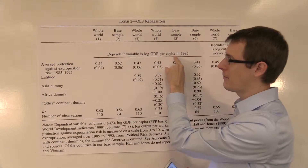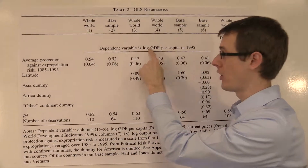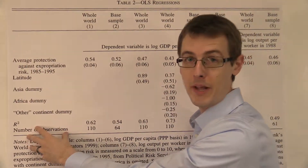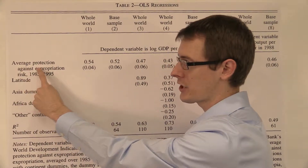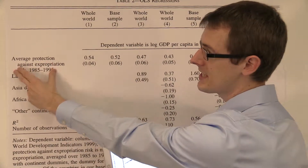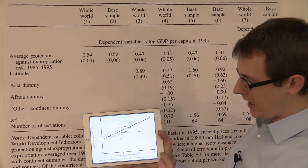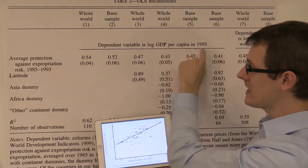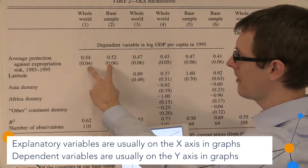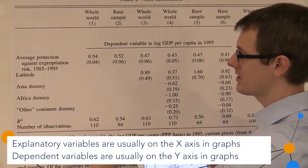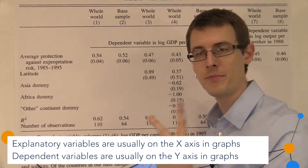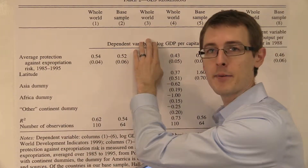Here I've got my outcome variable — economic development, log GDP per capita in 1995. Over here are explanatory variables: average protection against expropriation risk, 1985–1995. This is the same variable that's plotted on the horizontal axis, and this is the same variable that's on the vertical axis. In these two specifications, these are the only variables I'm looking at — just two variables: property rights and economic development.